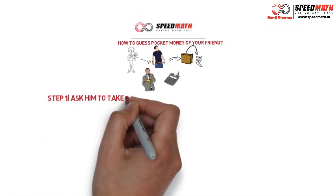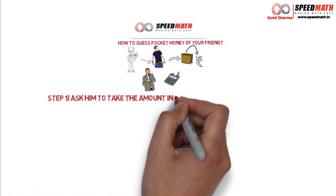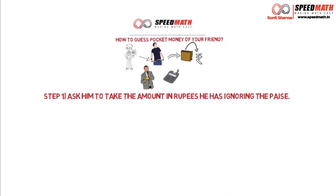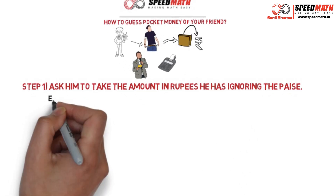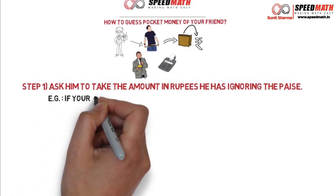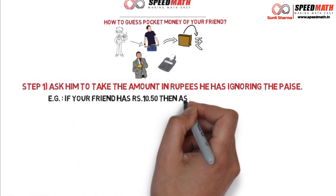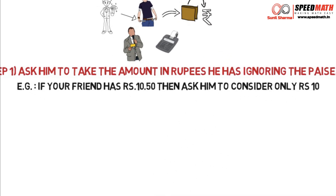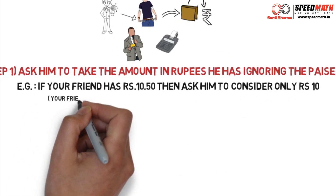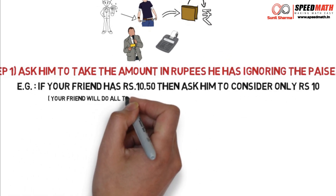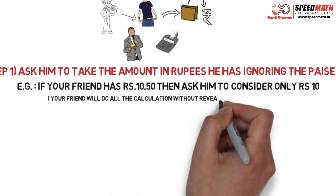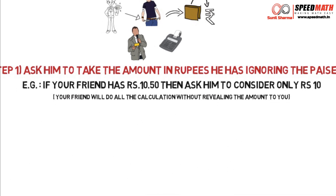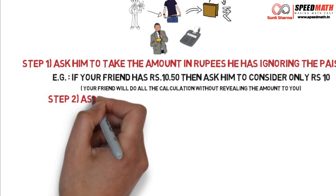Step 1: Ask him to take the amount in rupees that he has, ignoring the paise. For example, suppose your friend has 10 rupees 50 paise — ask him to consider only 10 rupees and ignore the 50 paise. Remember, your friend is not supposed to mention the amount; he will silently do all the calculations in the calculator.